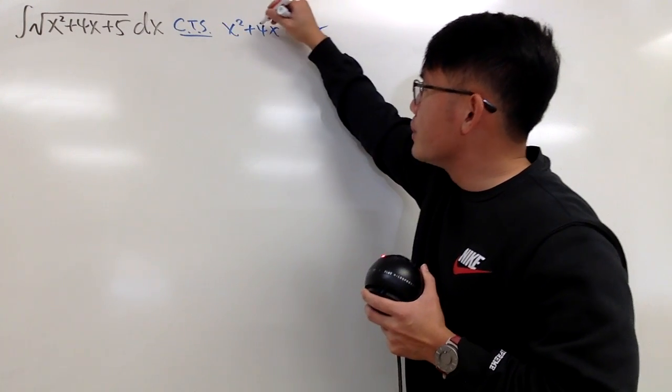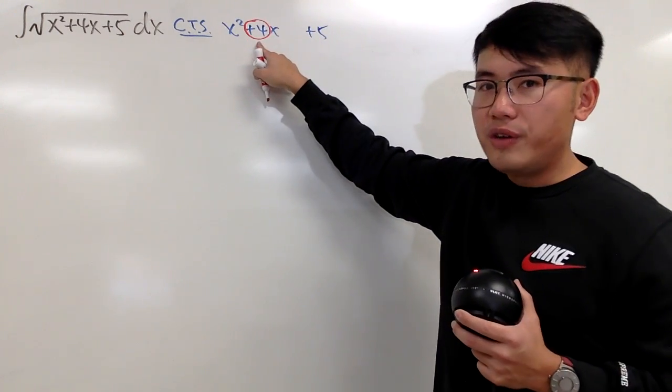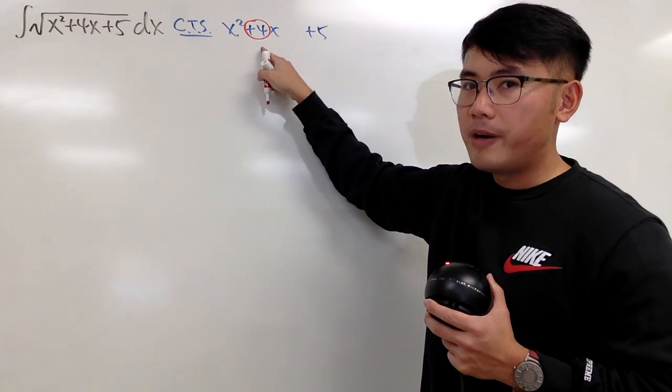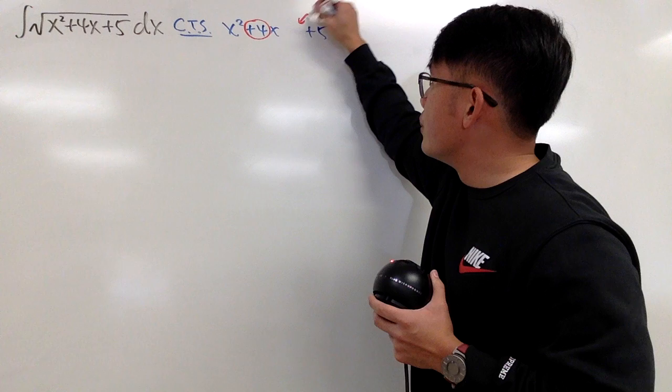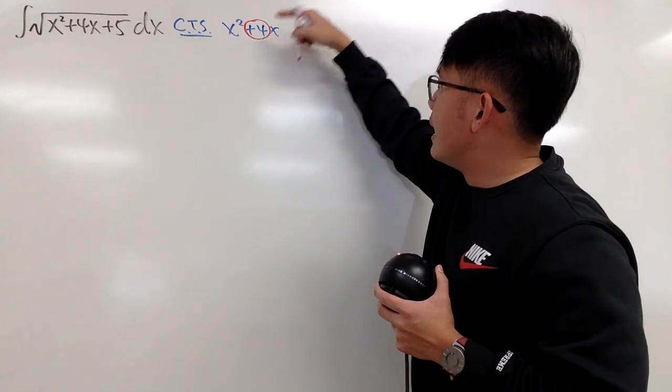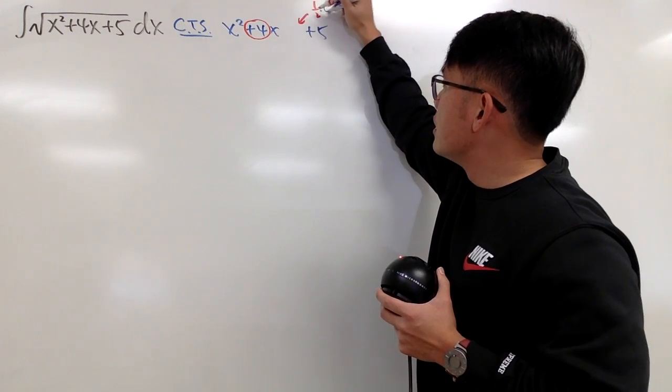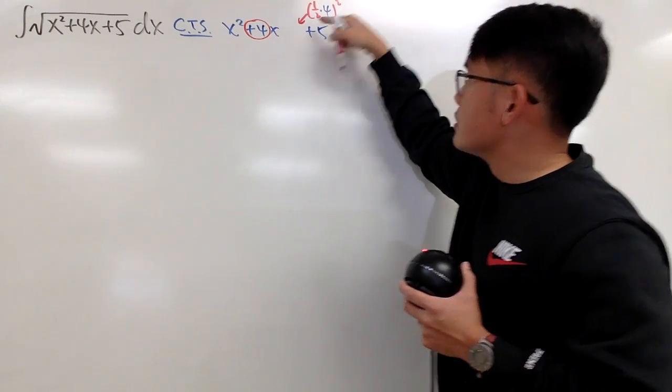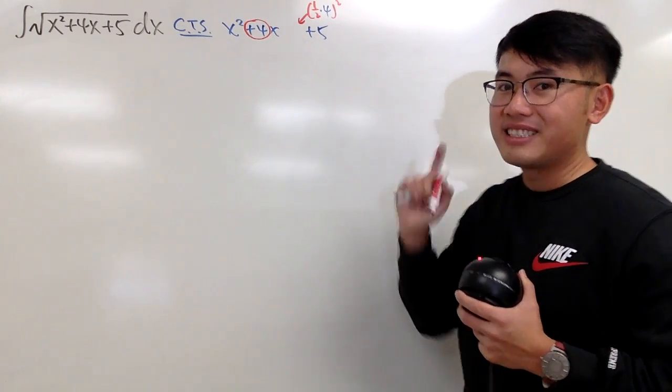Then you are going to look at this number here, the coefficient of x, which is 4 here, and you are going to add, the little formula is just 1 half times 4, and then you square that. So you just need to work this out, and that's the magic number.